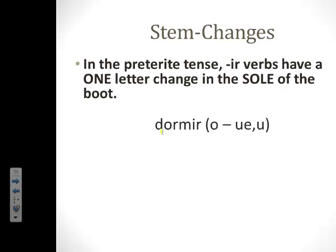Let's look at the verb dormir again. It's an IR verb, so it will have IR preterite endings. And it's going to have a one-letter change. To help you remember that, I'm going to code our stem-changing verbs like this. The O goes to UE in the present tense — that first part is for present tense — and then it goes O to U in the preterite tense, which is what you see after the comma.